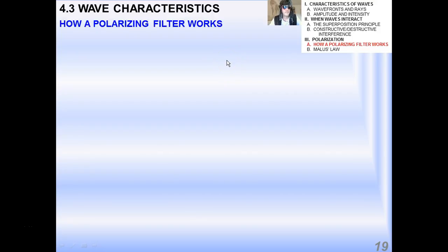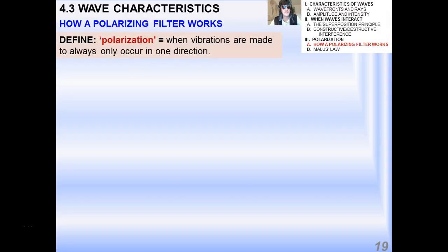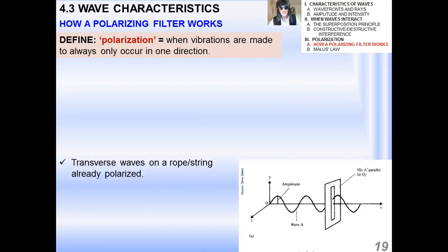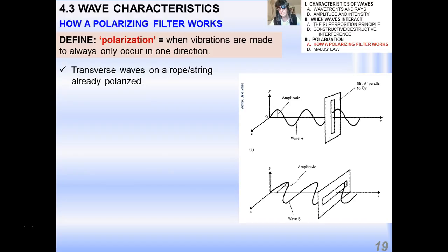Physics students, welcome to the third and final video for topic 4.3, Wave Characteristics. In this video, I'm going to talk about polarization and something called Malus's Law, which is related to that. So a definition of this term polarization in physics: what it means is when vibrations, think about waves, are made to occur only in one direction. This is kind of a weird definition until you actually see what I mean.